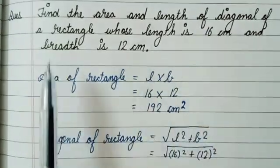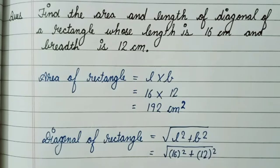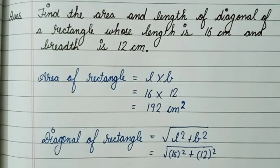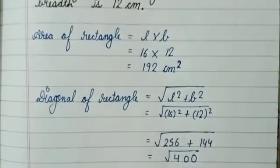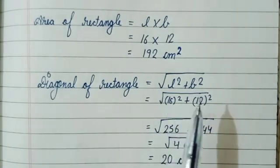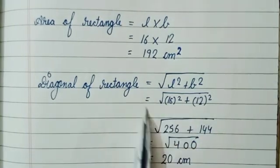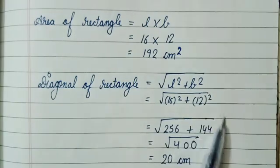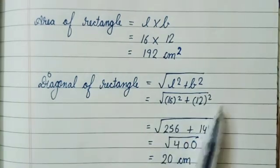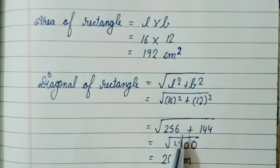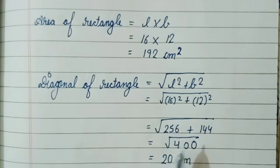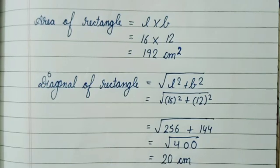Now we have to find the diagonal of the rectangle. The formula is: diagonal equals under root of L squared plus B squared. Length is 16 and breadth is 12. So 16 squared is 256 and 12 squared is 144. Under root of 256 plus 144 gives under root 400, and removing the root we get 20 centimeters, which is our diagonal of the rectangle.